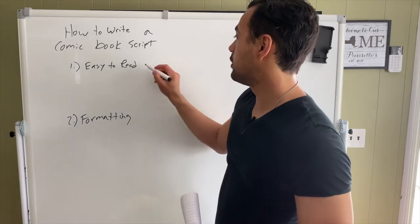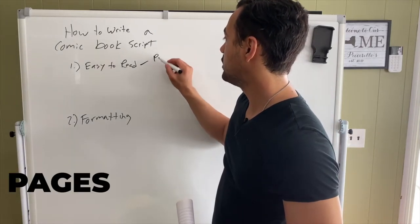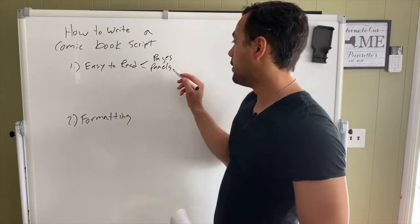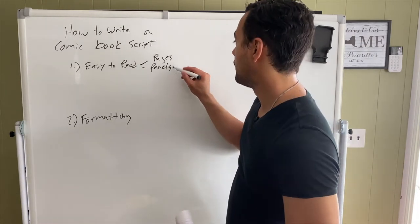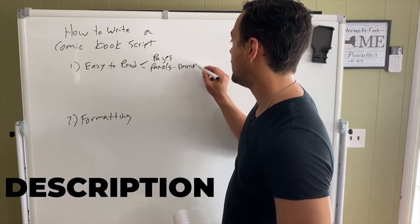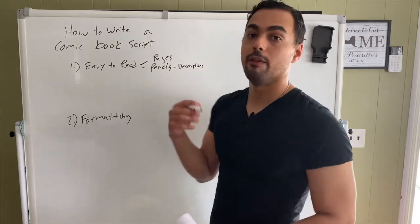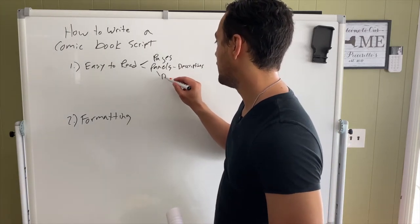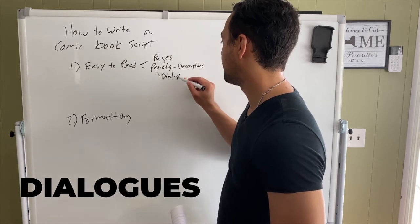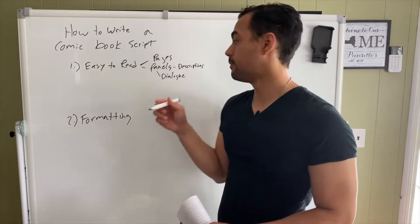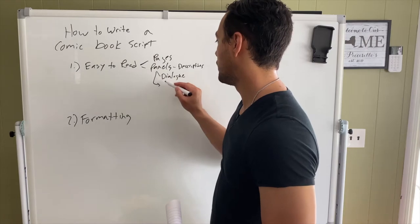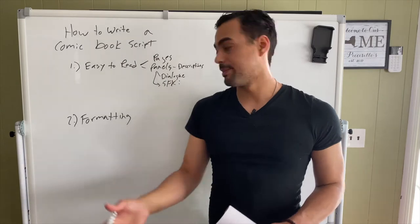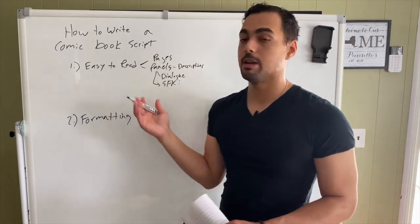First, you're going to break down your story by pages. Each page is going to have panels, and the panels are going to have descriptions of the images and what's going to be in the panel. The panels are also going to have dialogue inside — what character is talking and what they're saying. Also sound effects: your kabooms, your blam, your zap, all that. So you're going to make it easy to read.